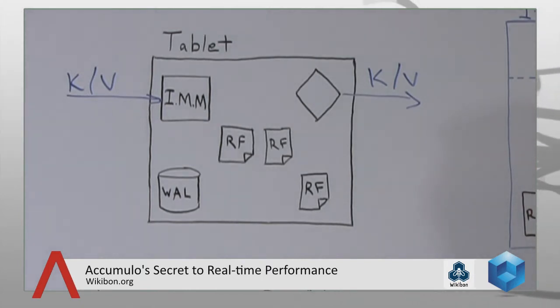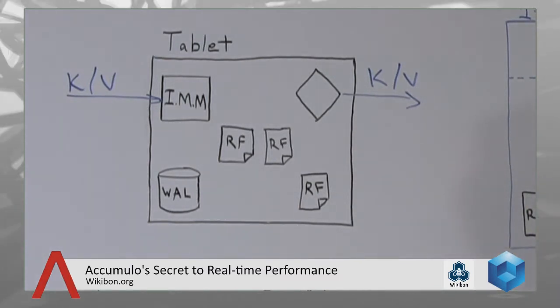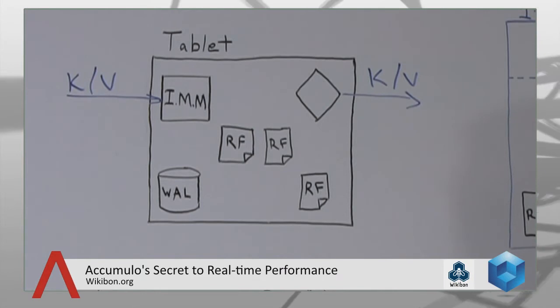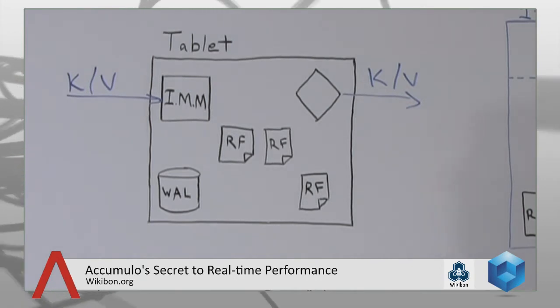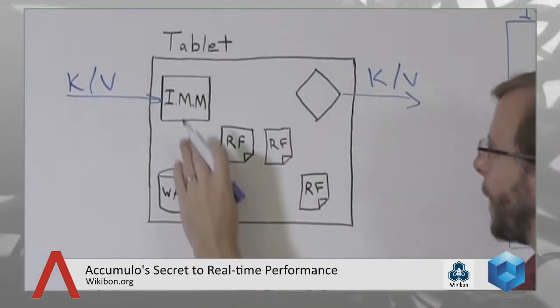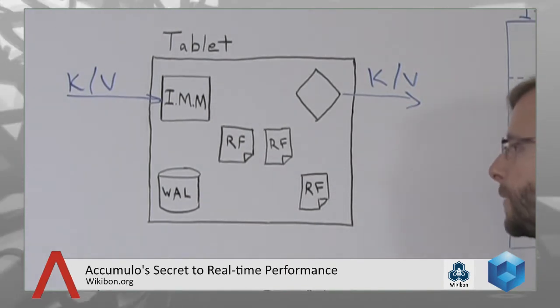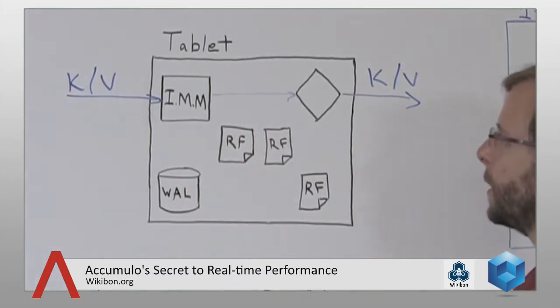We're going to optimize two different elements as we perform that sort operation. The first is to minimize latency — as data streams in, we want it to be able to contribute to a query with as little latency as possible. At the same time, we want to minimize our impact on disk resources. Accumulo is a disk-based architecture, and as we store data on spinning disks, we want to perform sequential I/O rather than random I/O whenever possible. Key-value pairs coming in in random order immediately go into an in-memory map, which is a balanced binary tree. It's random I/O but inside memory, so it's efficient, and as soon as data is in that in-memory map it can contribute to a query — minimizing latency.